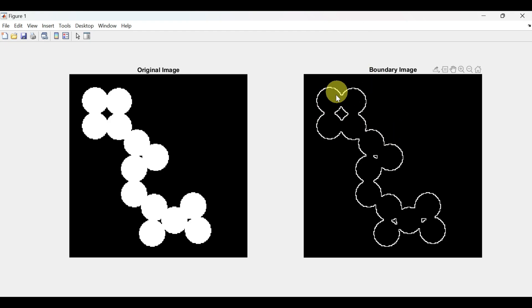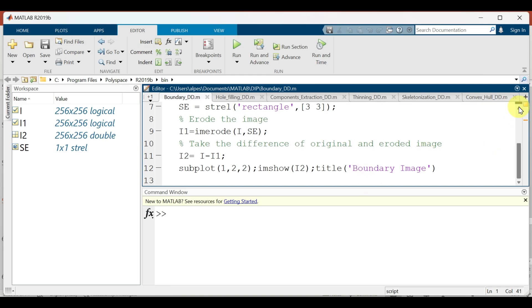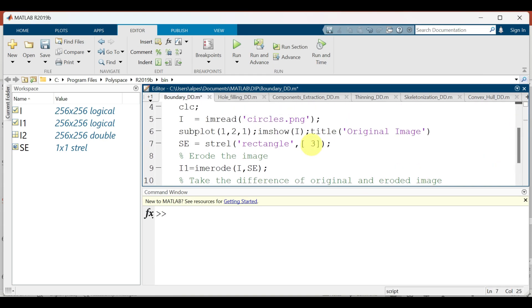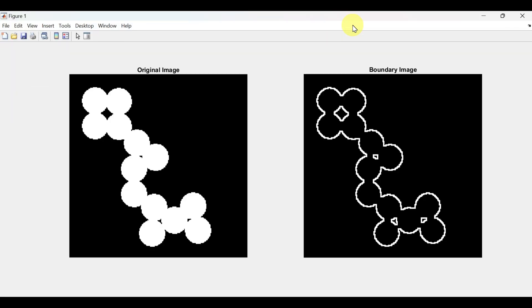Now if we want to get a thick boundary, let us change the structuring element from 3x3 to 5x5. Let us again run and see the output. So now we can see that we have obtained a thick boundary.